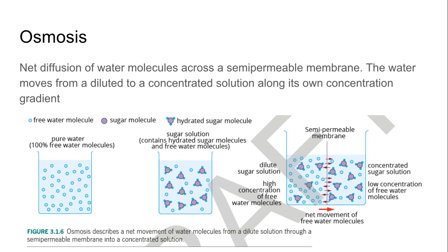We're now looking at osmosis, which is the net diffusion of water molecules across what we refer to as a semipermeable membrane. Water moves from a dilute to a concentrated solution along its own concentration gradient. We can see on the left all the water molecules and in the middle a sugar solution. If we place those into the same container with a semipermeable membrane — shown as the purple line — the water molecules will move from where they are in high concentration, the dilute sugar solution, to where there is a concentrated sugar solution with more sugar molecules than water.